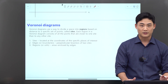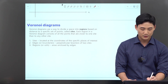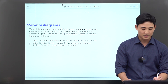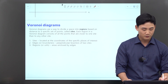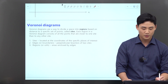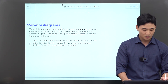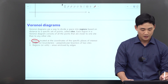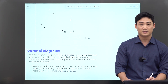The more formal definition: Voronoi diagrams are a way to divide a space into regions based on distance to a specific set of points called sites. Each region in a Voronoi diagram consists of all the points that are closer to one site than to any other site. We would have to know the definitions of these, which are pretty intuitive as well. Sites are the coordinates of the specific places of interest.